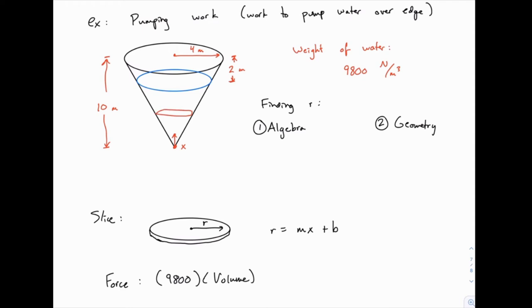The reason I'm doing that is that now we know the radius at two values of x. If x equals 0, we're at the bottom of the tank and r also equals 0. At that point the radius is 0. The other place we know is when x equals 10, at the top of the tank, the radius is 4.